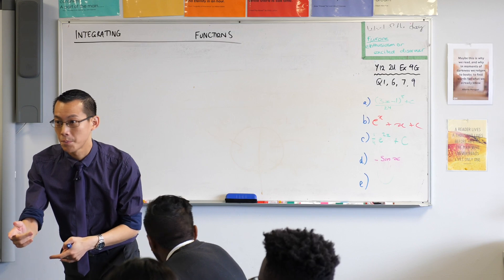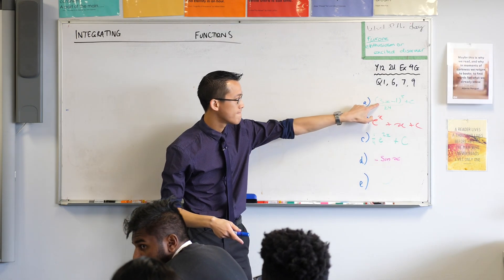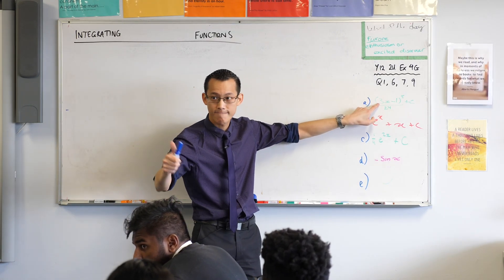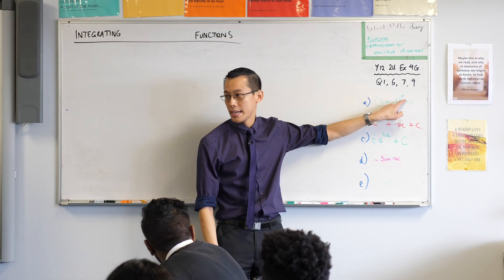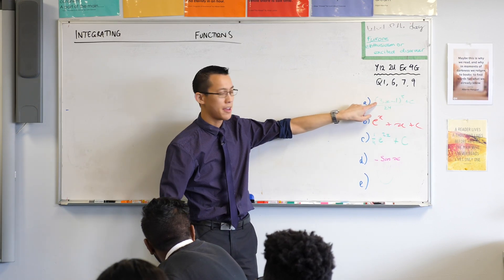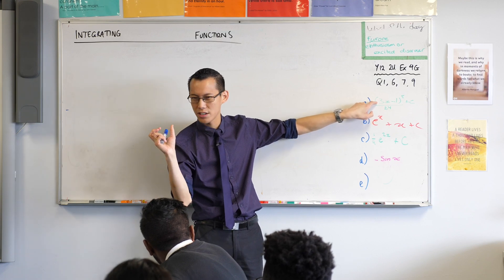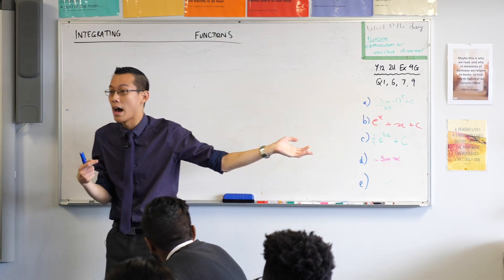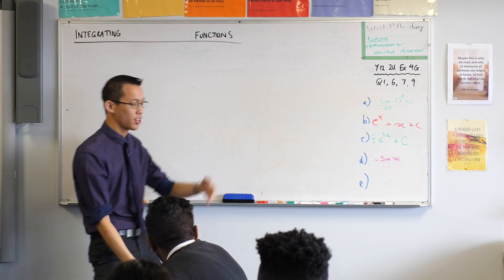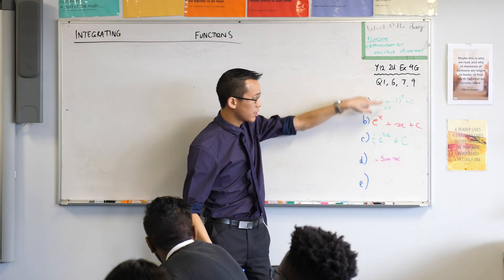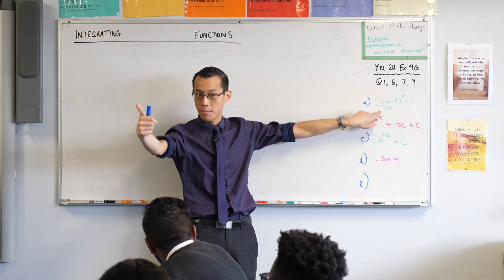Excellent, so we've divided by the new index, which is 8, we've also divided by the derivative of the inside function. What do we call this? It's got a name when we do this kind of integral. It's reverse chain rule, very good. So just like we do normal chain rule, inside derivative, you divide by both of them, thumbs up.